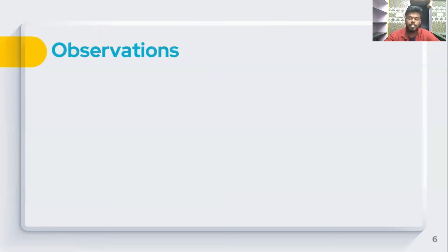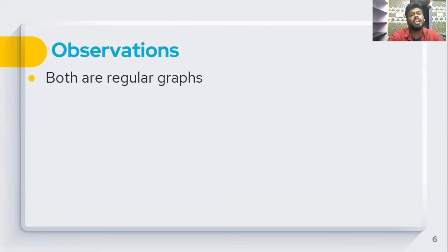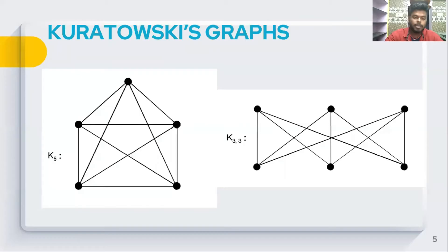The two are regular graphs. If you look at the degrees, for the complete graph K5 the degree is n minus 1, so with 5 vertices, minus 1 is 4. Every vertex has degree 4. For K3,3, every vertex has degree 3.